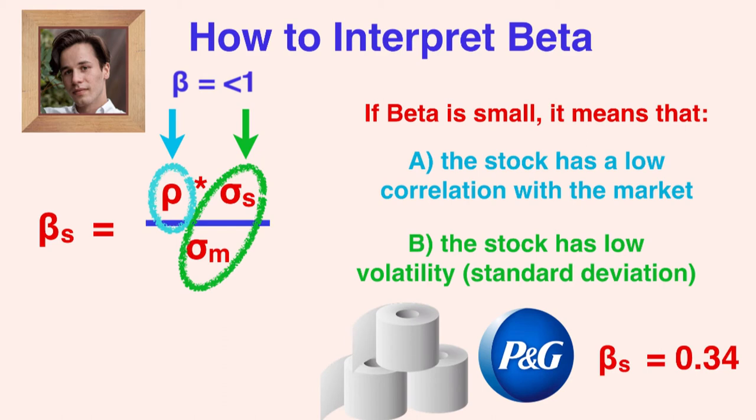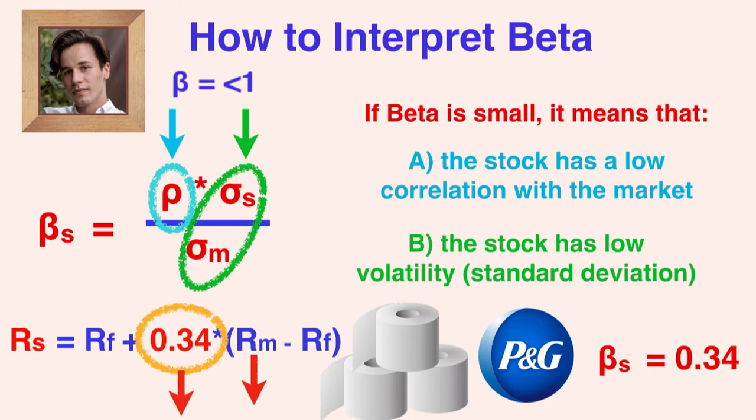Try using a beta of 0.34 in the CAPM formula to calculate the expected returns for P&G. You can expect that, if the returns in the overall market dropped by 1%, P&G's stock returns would only drop by 0.34%, making it less risky than the market.